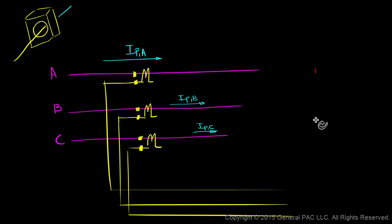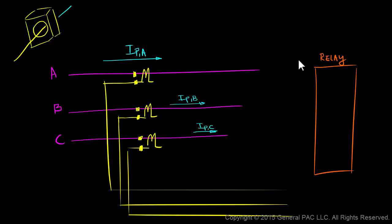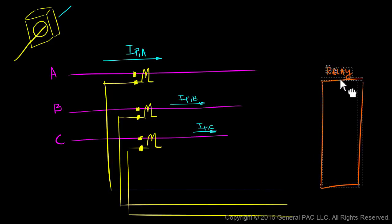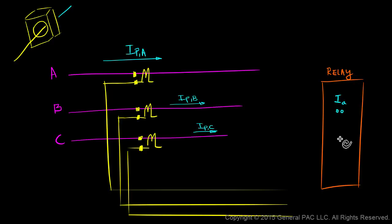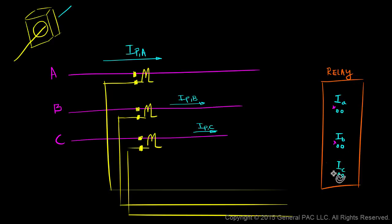Our relay looks something like this. On our relay, there are input terminals for phase A, B, and C current. This is for IA, this is for IB, and this is for IC. Often one of these input terminals is designated as the polarity side, so we're going to designate this side as the polarity side of our input terminal.